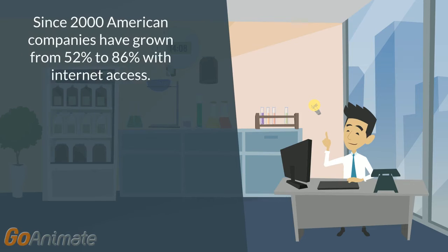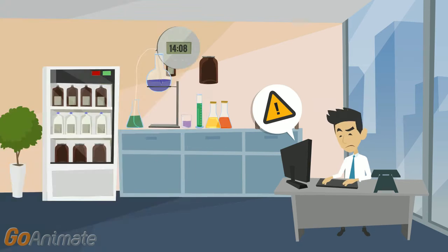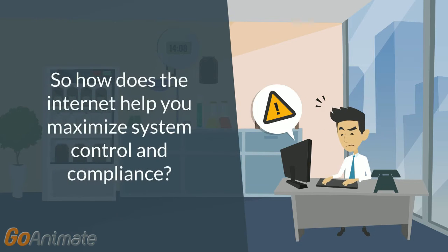Did you know that since 2000, American companies have grown from 52% to 86% with internet access? So how does the internet help you maximize system control and compliance?